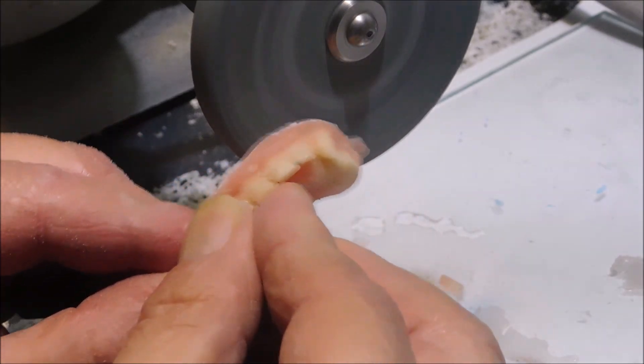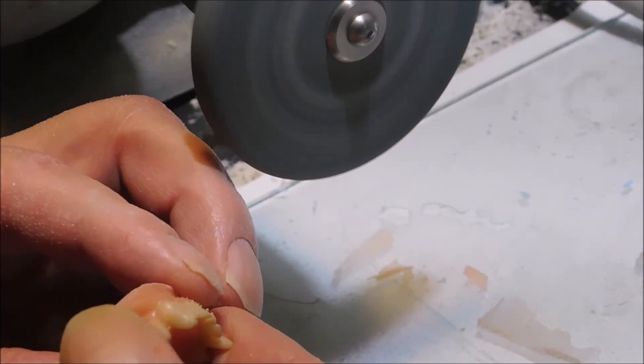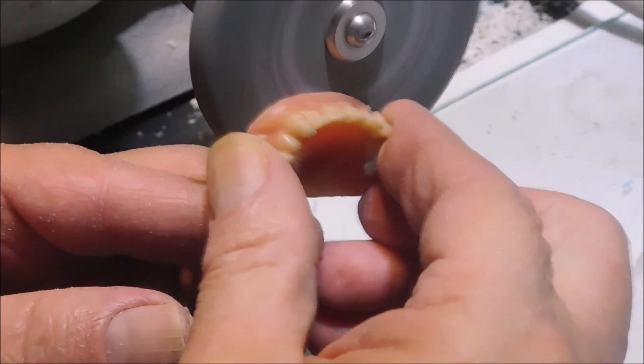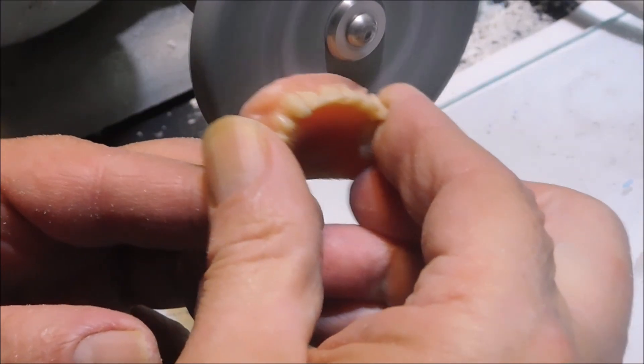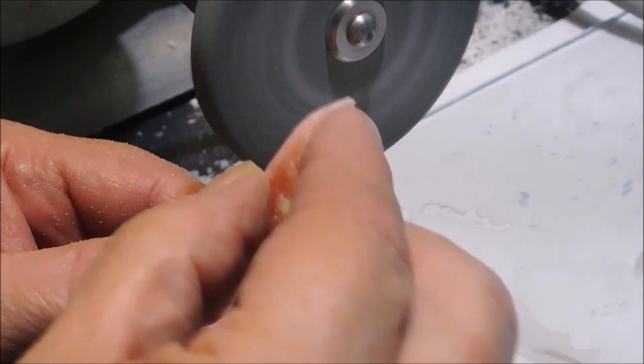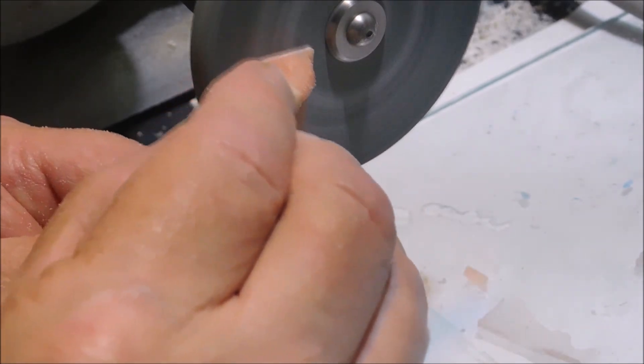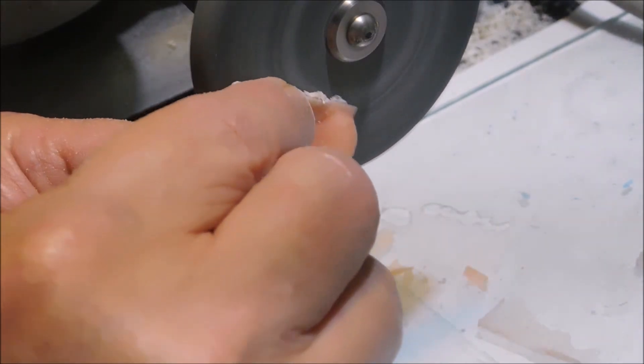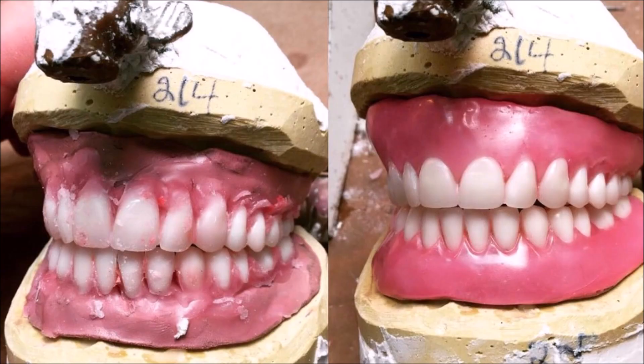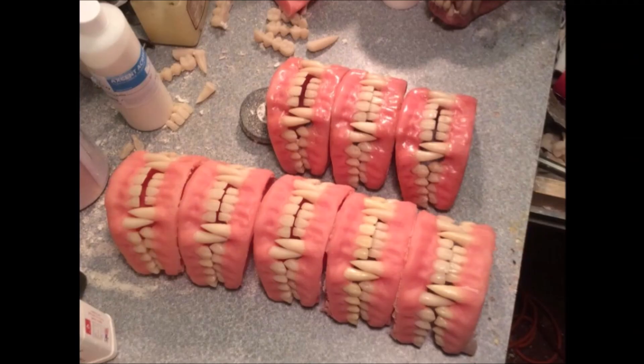As far as dental acrylic, I also use it to make eyes. There's a lot of people in the movie industry that used to be or are part-time dental lab technicians. One of the famous ones was John Chambers who did Planet of the Apes - he did prosthetics in the military.